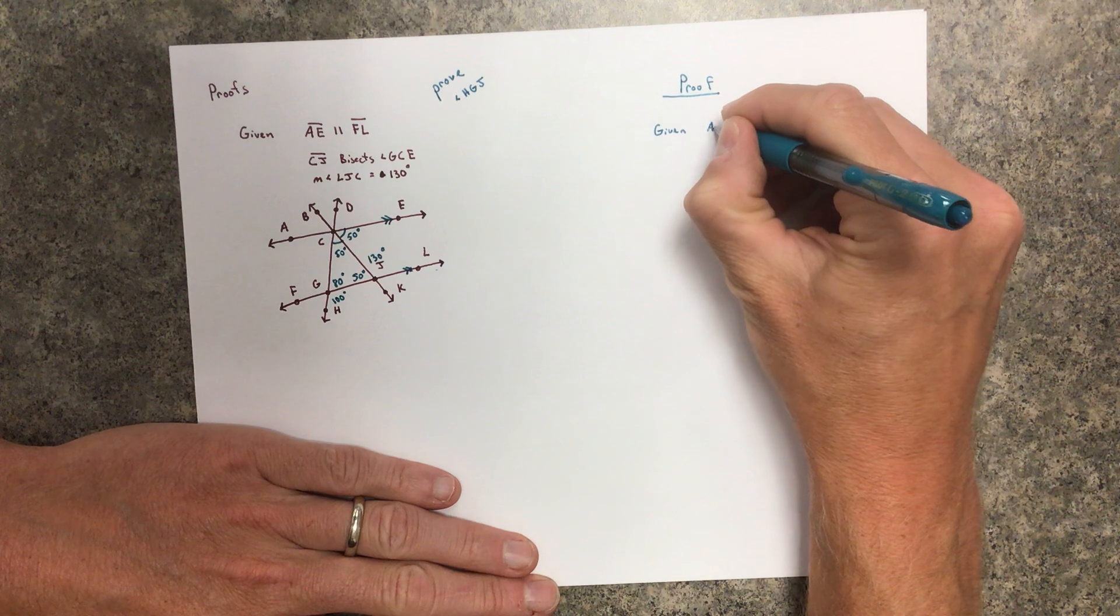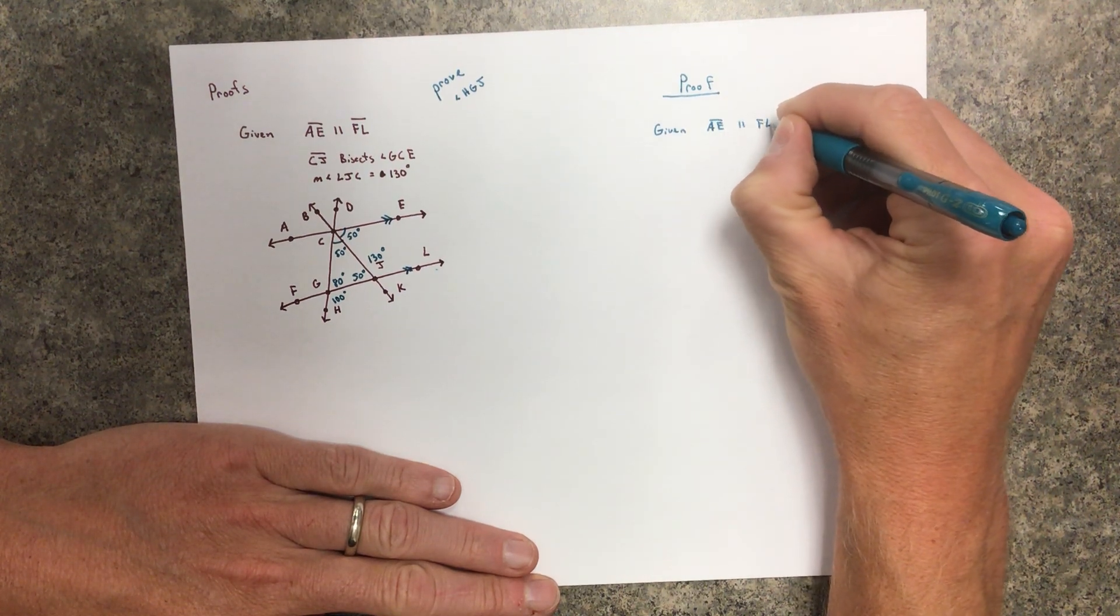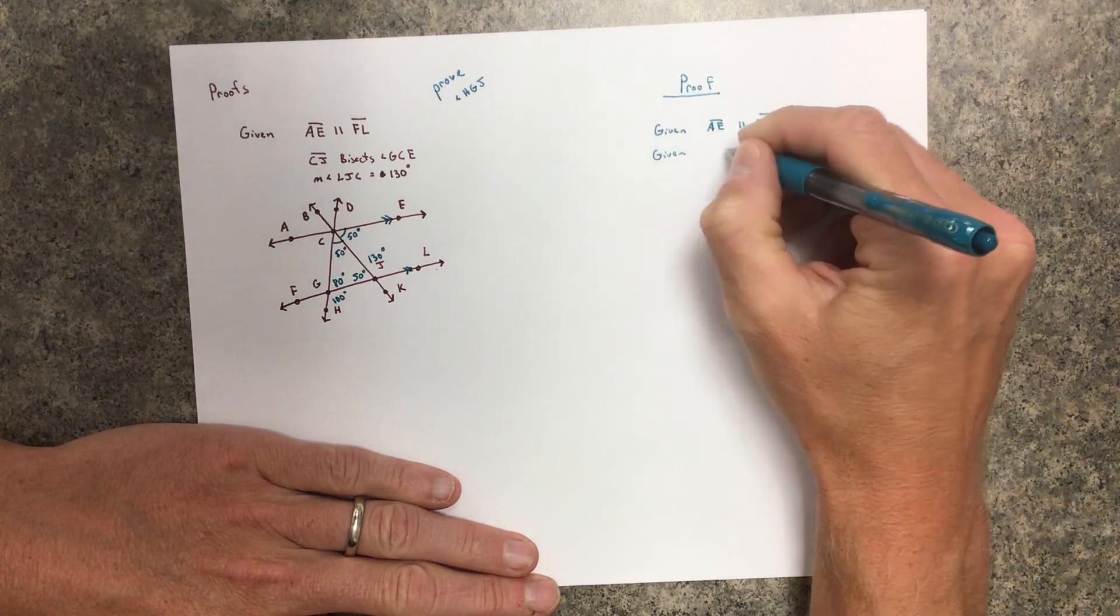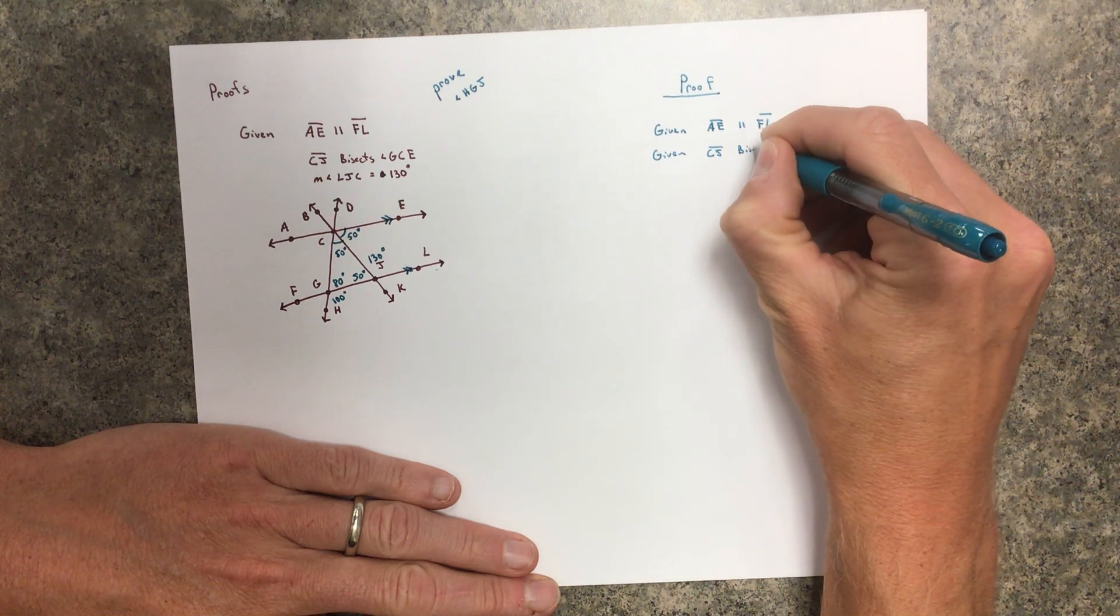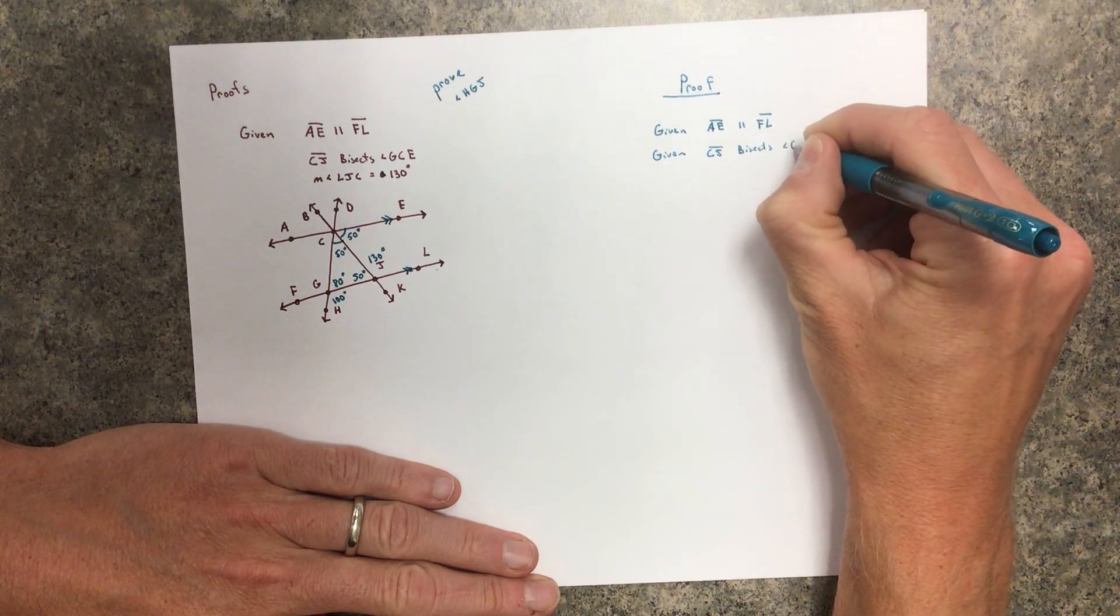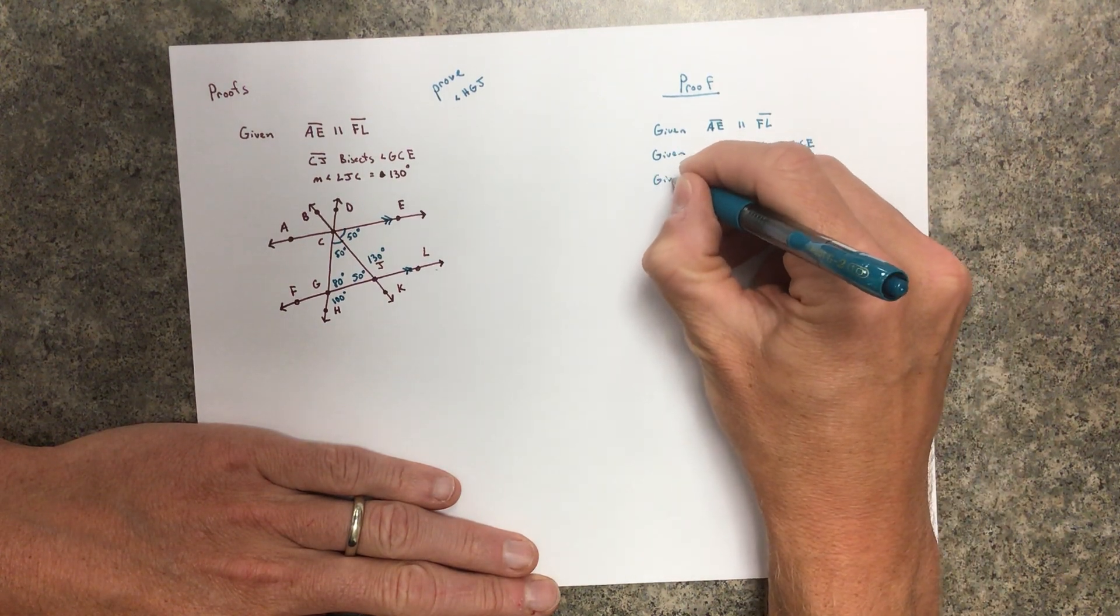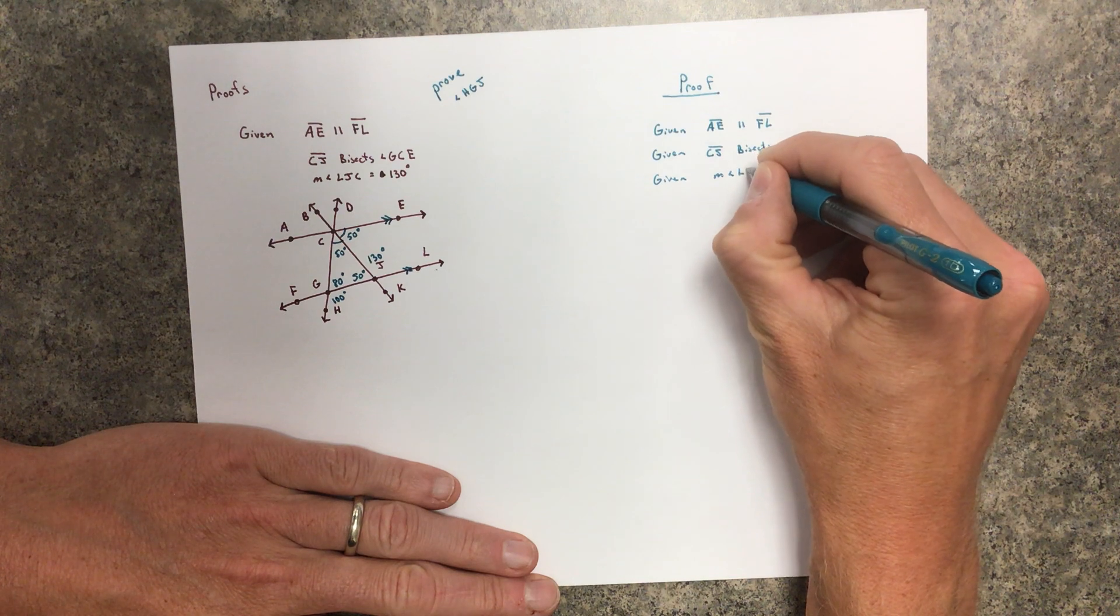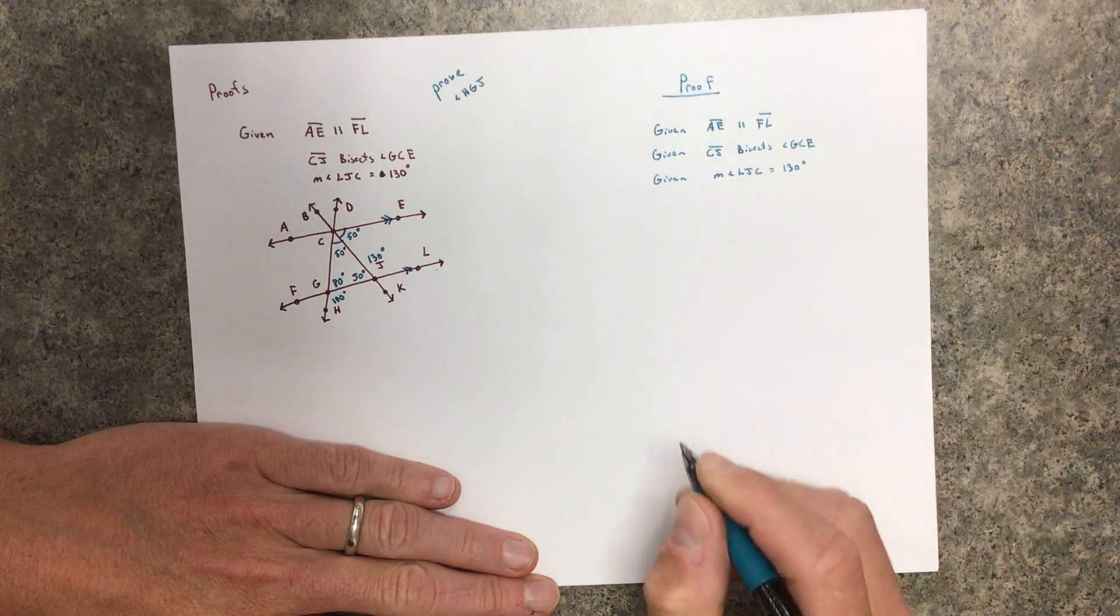We have to say it's given that AE is parallel to FL. It is given that CJ bisects angle GCE. It is given that the measure of angle LJC measures 130 degrees.